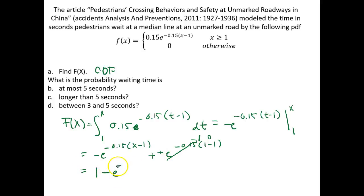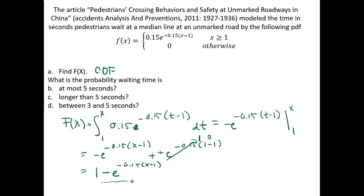We just flip the expression around to look a little nicer: 1 minus e to the negative 0.15(x minus 1). That is our cumulative density function, and now we can use it to find probabilities.